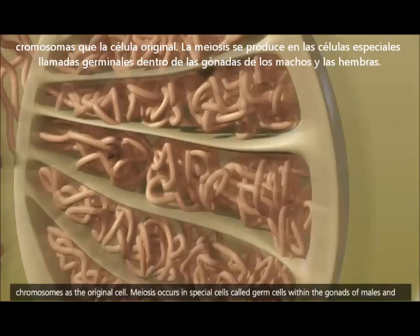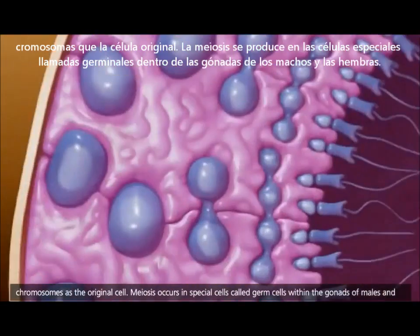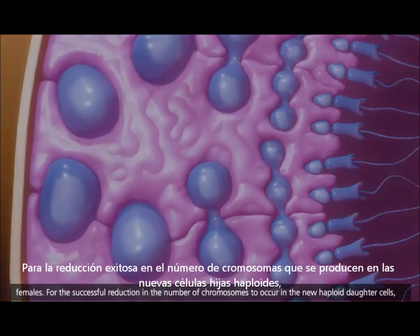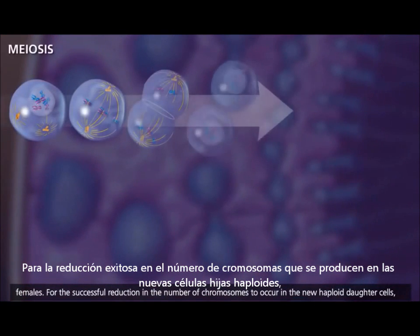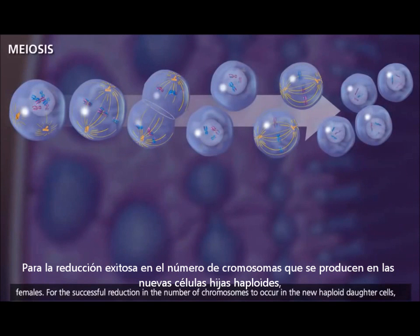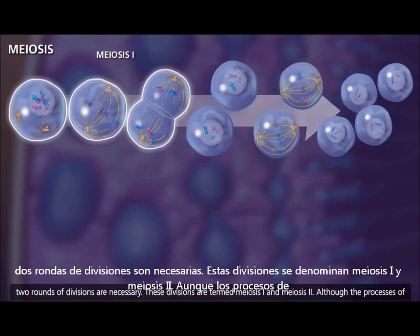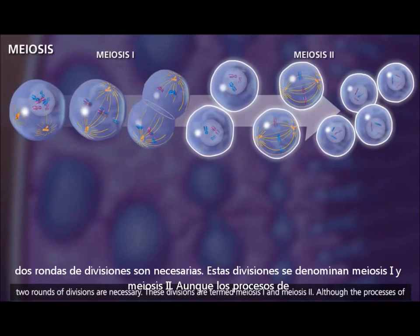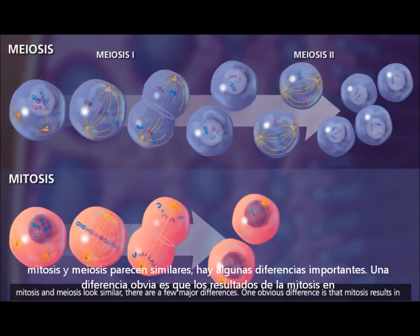Meiosis occurs in special cells called germ cells within the gonads of males and females. For the successful reduction in the number of chromosomes to occur in the new haploid daughter cells, two rounds of divisions are necessary. These divisions are termed meiosis 1 and meiosis 2. Although the processes of mitosis and meiosis look similar, there are a few major differences.